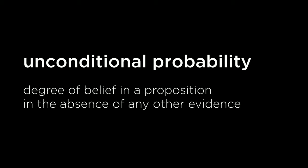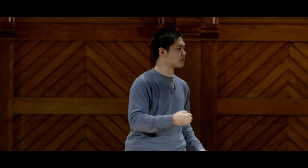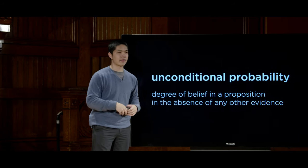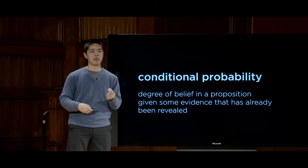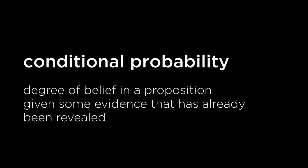These judgments about probability in the abstract are known as unconditional probabilities — a degree of belief in some proposition in the absence of any other evidence. But when training an AI to make intelligent predictions, it's usually not unconditional probability we're dealing with, but rather conditional probability: probability where we have some initial knowledge about the world. Conditional probability is the degree of belief in a proposition given some evidence that has already been revealed to us.